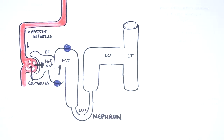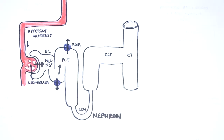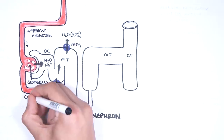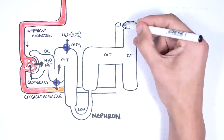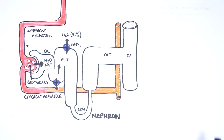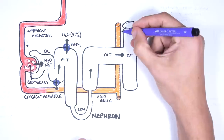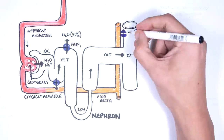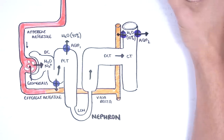90% of the water gets reabsorbed back into circulation at the proximal convoluted tubule via aquaporin type 1 channels. The reabsorption of water back into circulation is actually reabsorption into the vasa recta, which is the continuation of the glomerulus and the efferent arteriole. The vasa recta functions to secrete and reabsorb things from the nephron tubules. The remaining 10% of water continues through the loop of Henle, the distal convoluted tubules, and the collecting ducts, where it can be reabsorbed in response to ADH.